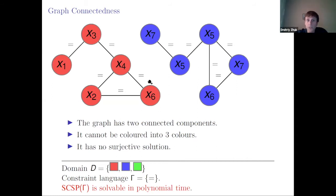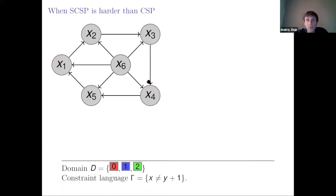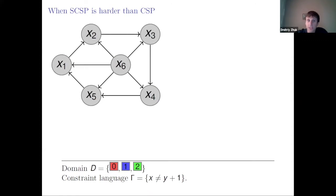This problem is solvable in polynomial time. To solve it, we just need to count connected components. If the number of components is at most the number of elements in our domain, then we have a surjective solution; otherwise we do not. So for this constraint language, everything is simple.